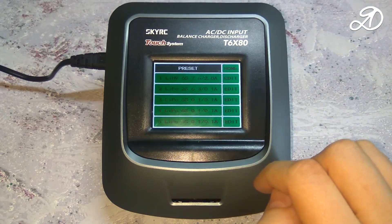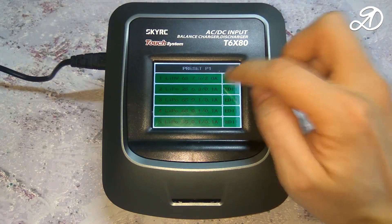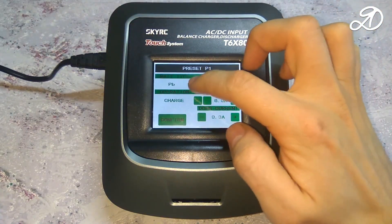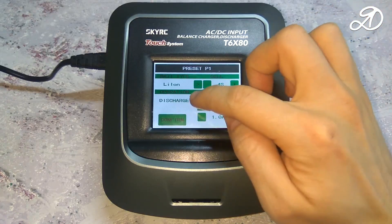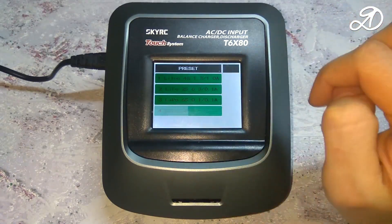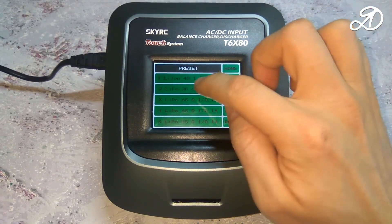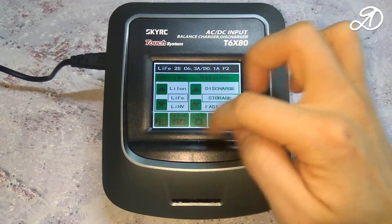Here you can configure several profiles for frequently used batteries. Just click on the appropriate line to select it. All parameters are set and it remains to press the start button.